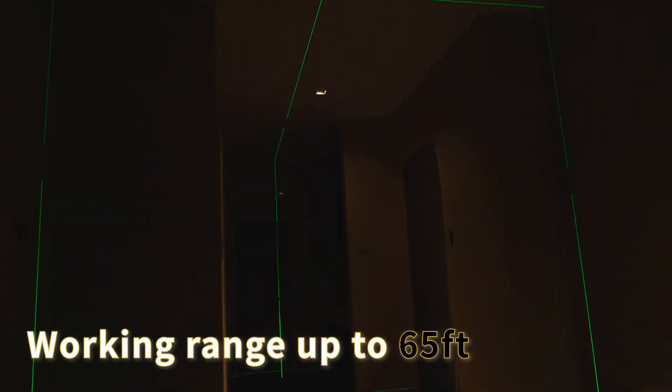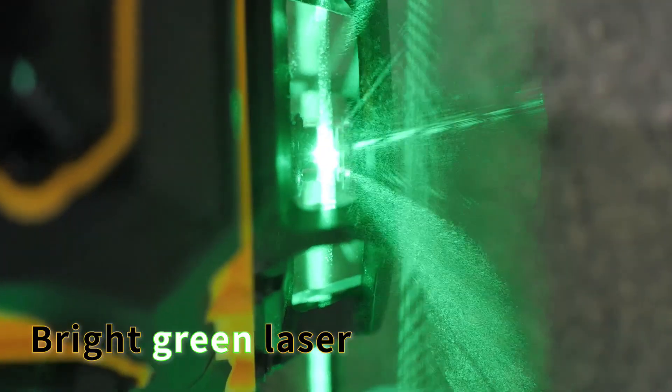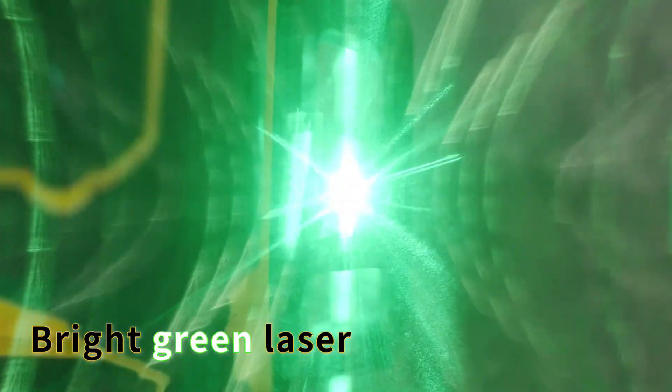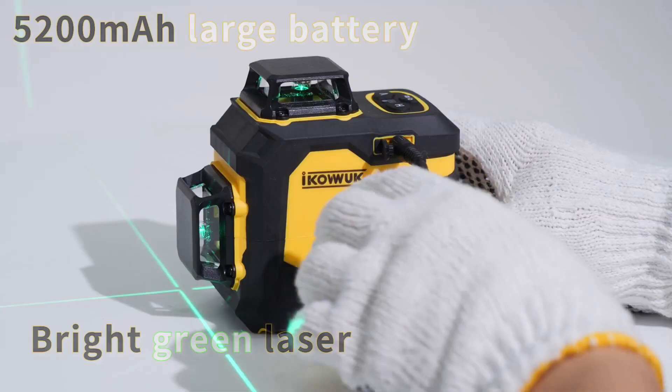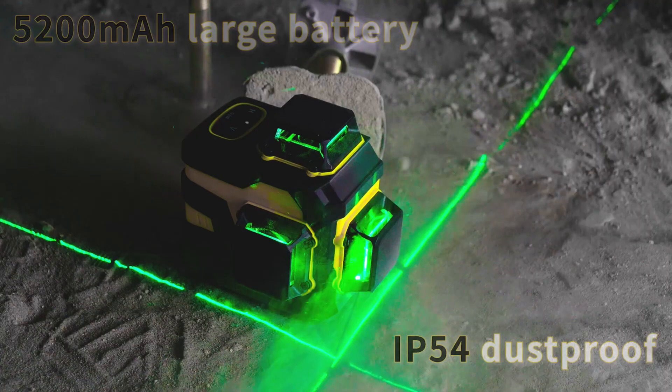Turn on the power to self-leveling mode, the cross-line laser will be automatically leveled within 3 degrees, otherwise the cross-line laser will send out an alarm with the lasers flashing. Keep the power off, press and hold the brightness button for 3 seconds to turn on/off the manual leveling mode, which can be placed at any angle of use.